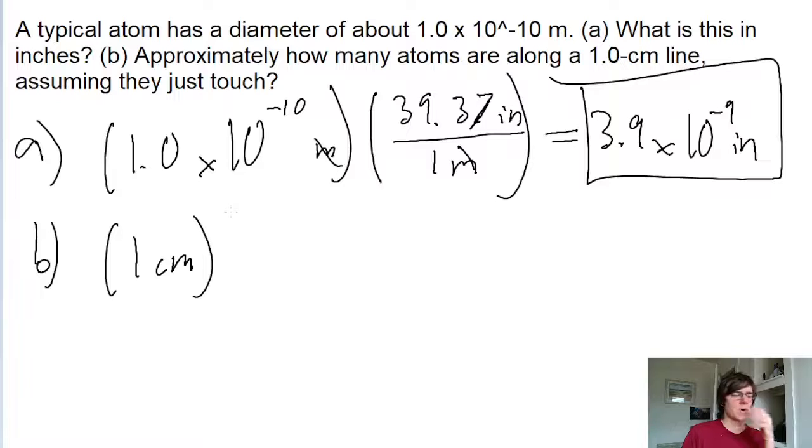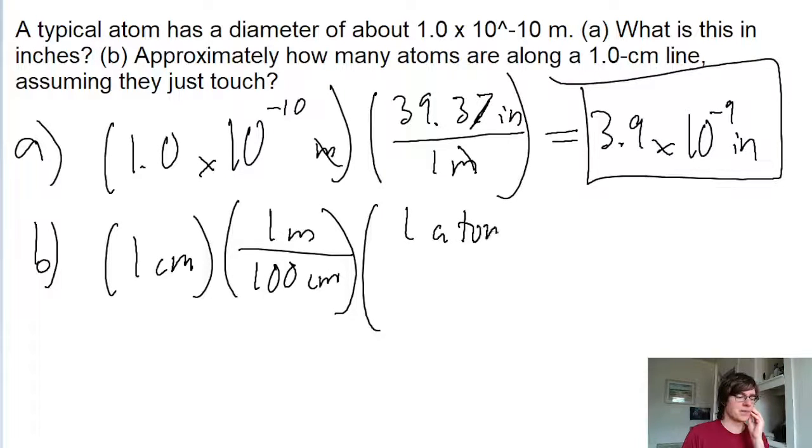We're given the diameter of the atom in meters. So let's first convert from centimeters into meters. That's 1 meter per 100 centimeters. And then we're told that one atom has a diameter of 1.0 times 10 to the power of negative 10 meters.